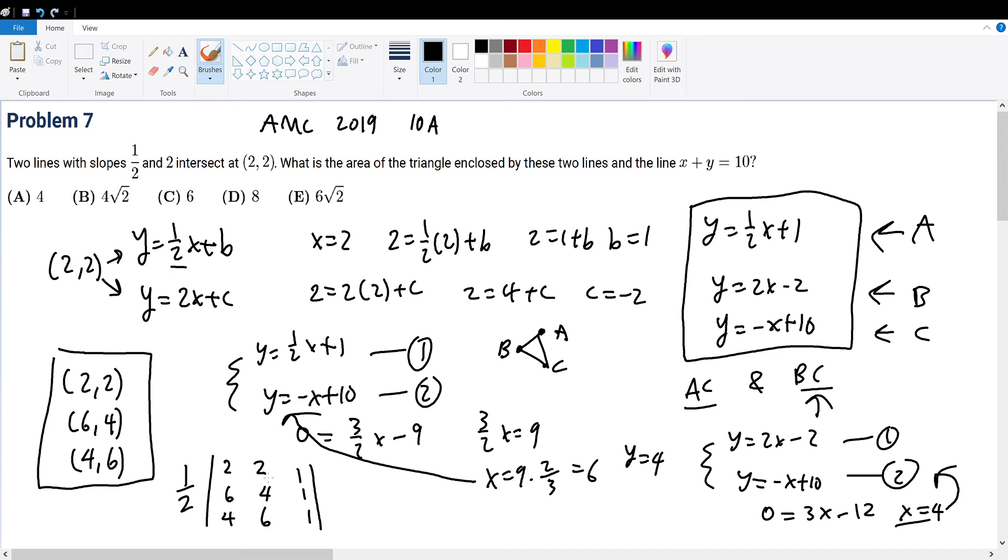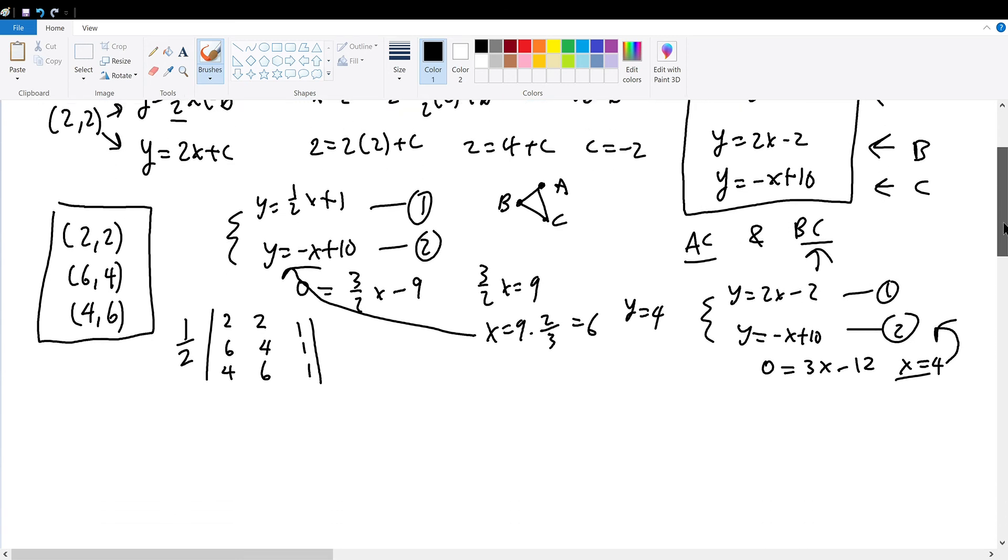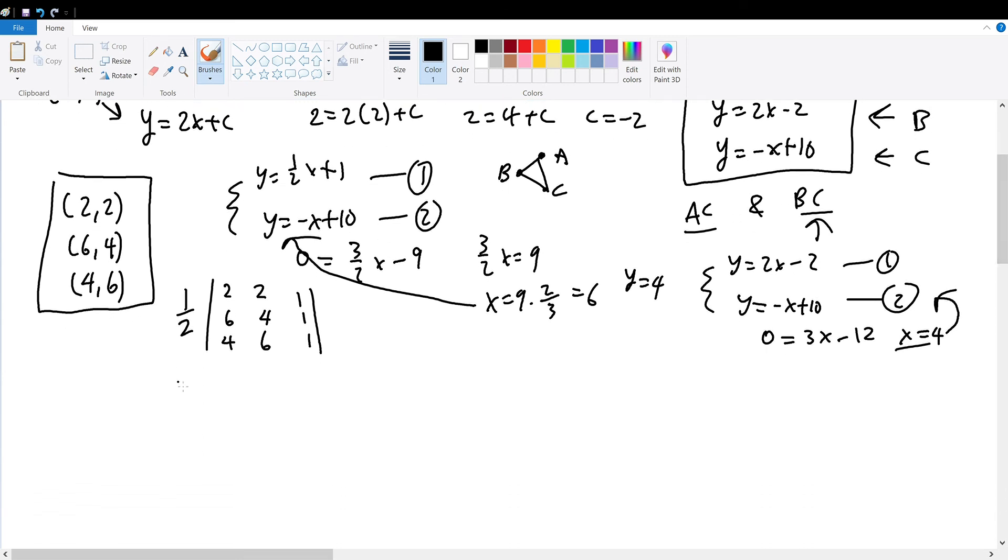Now, the ordering for which you do it, (2,2) goes in the first row, (6,4) goes to the second row, it doesn't matter. It just so happened that I thought of this in this particular order. You could have wrote it the same thing as 1/2, (6,4,1), (2,2,1), and (4,6,1).